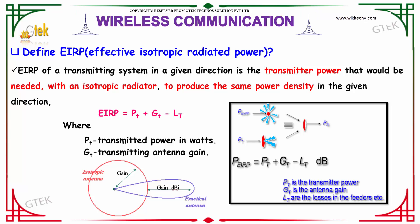The EIRP of a transmitting system in a given direction is said to be the transmitted power that would be needed within an isotropic radiator in order to produce the same power density in a given direction.